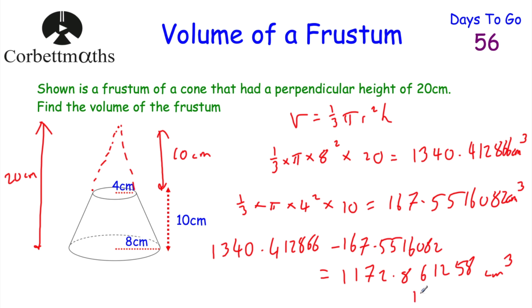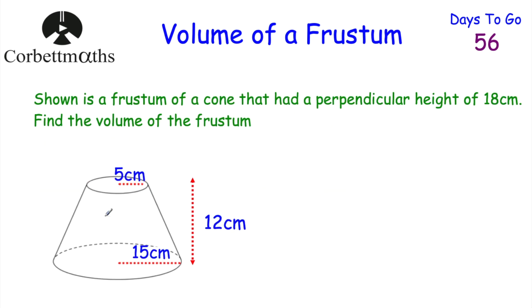We've got the volume of the whole cone and the volume of the part that was removed. Taking them away: 1340.412866 minus 167.5516082 gives 1172.861258 centimetres cubed, which we can round to 1172.86 cm³. That's the volume of the frustrum — find the whole cone, find the part removed, subtract.